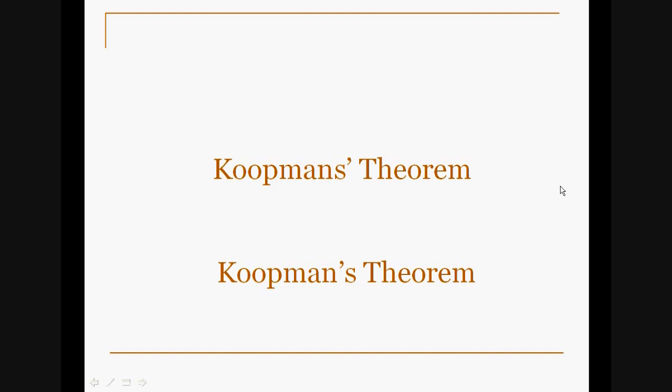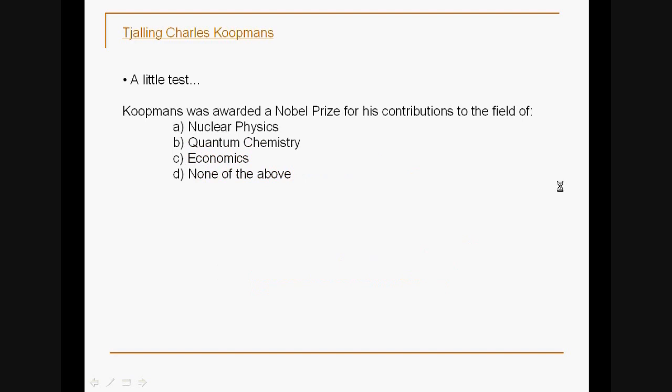Another little known fact about Koopmans: Let's have a test. Koopmans was awarded a Nobel Prize for his contributions to the field of... I'll give you five seconds to think about it. The correct answer is, you'll probably be surprised, economics. He was a joint winner with Leonid Kantorovich in 1975.